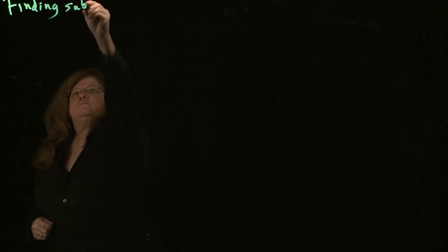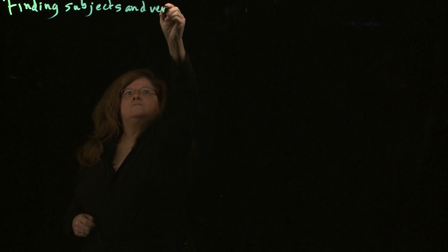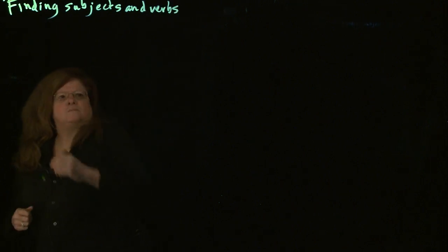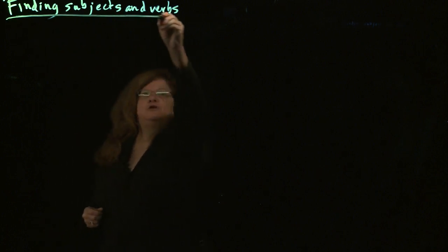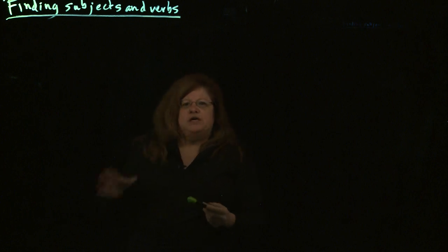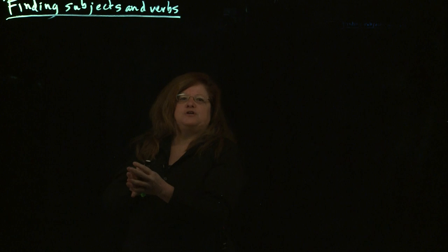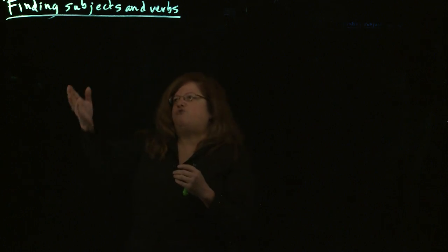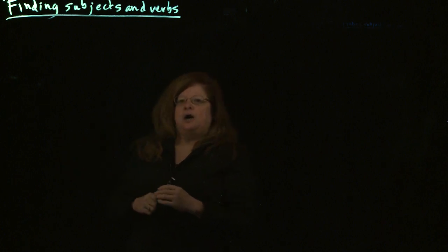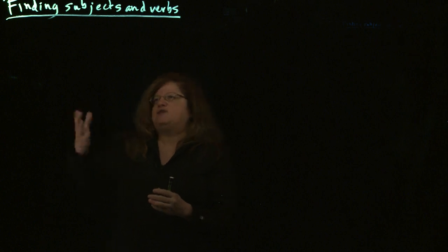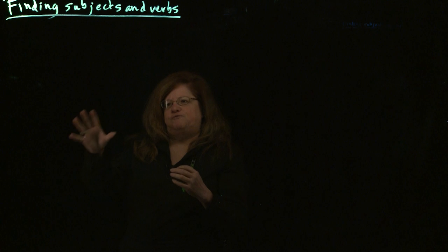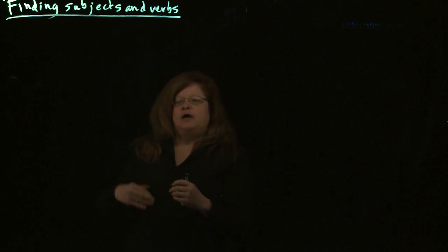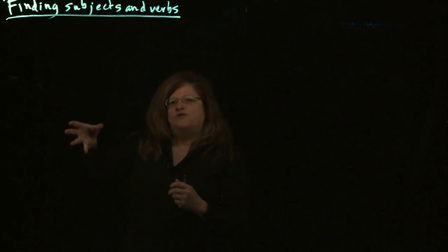What we're going to look at today is finding the subjects and the verbs in a sentence. When we look at the English language, the basic building block of the English language is the sentence. And the two basic building blocks of the sentence are the subject and the verb. If you can understand how to find subjects and verbs in a sentence, you can use those building blocks and have control over them. Finding the subjects and verbs is a very basic way of understanding the English language, and it's the basis on which you can work with a lot of other grammar issues.